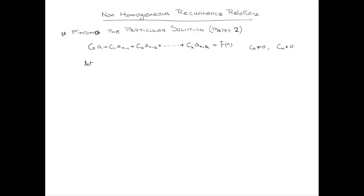Let us suppose that a_n^(hp) is the homogeneous part of the solution. Our next question is: if a_n^(hp) is the homogeneous part of the solution, then what will be the particular solution? How do we find the particular solution? We assume a particular solution depending on the homogeneous part and the function F(n). We will draw a table to find that particular solution, where F(n) is a constant multiple of certain forms.